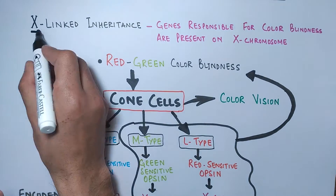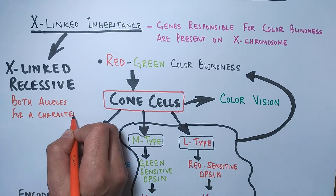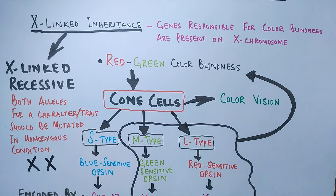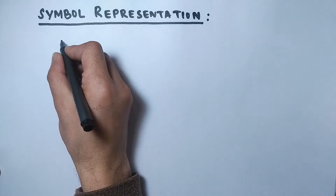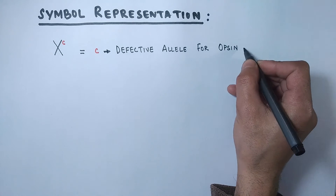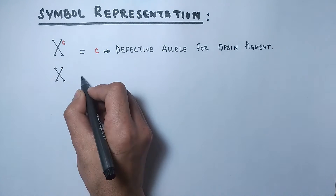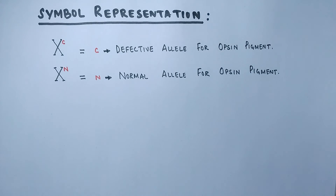Remember that this is X-linked recessive inheritance, which means both alleles for the trait must be mutated or defective — in homozygous condition. In XX females, both X chromosomes must carry the defective allele. If only one X chromosome has the defective allele and the other is normal, there will be no colorblindness. To represent these alleles, we use: X-superscript-C for the defective allele and X-superscript-N for the normal allele on the X chromosome.